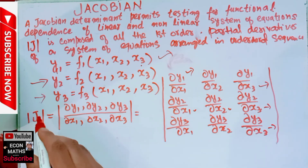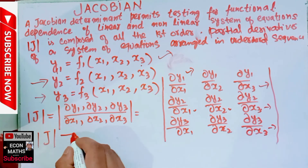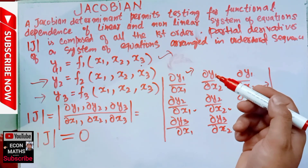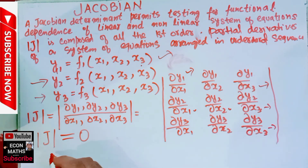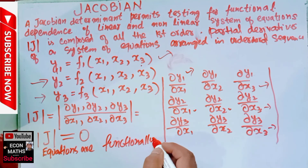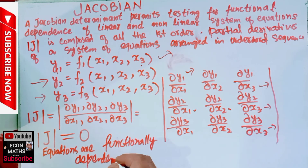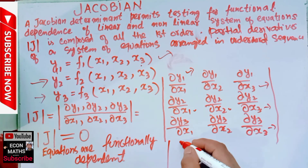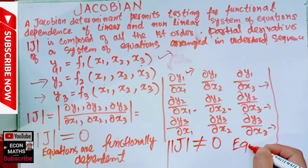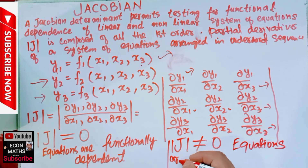Now, if the Jacobian determinant J is equal to zero, then the equations are functionally dependent. If the Jacobian determinant J is not equal to zero, then the equations are functionally independent.